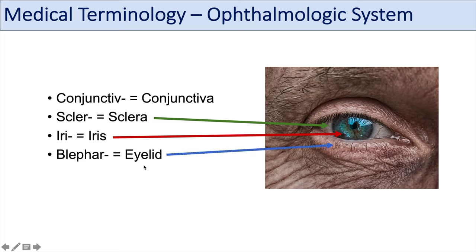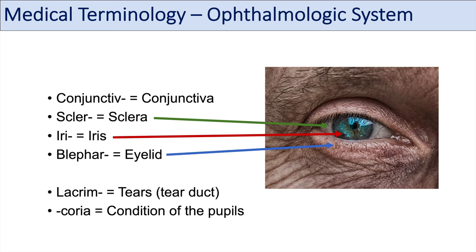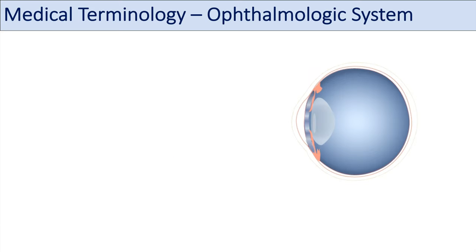Blephar refers to the eyelid. Blepharitis is an inflammation of the eyelid, and this can be a common cause of reddened eyelids in older patients. Some other prefixes for eye-related structures include lacrim, which refers to tears — you can think of lacrimal duct or tear duct. Lacrimation means crying or the production of tears. And then chorea — since ia means condition, chorea means condition of the pupils.